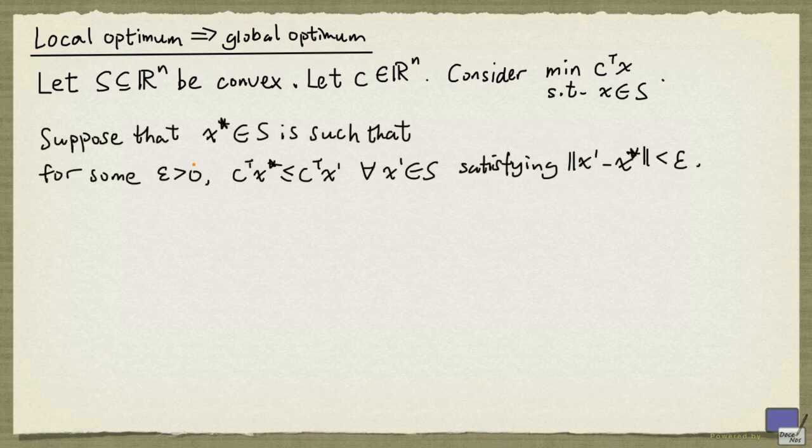Suppose that there is an element of S, x star, such that for some epsilon greater than 0, c transpose x star is less than or equal to c transpose x prime for all x prime in S satisfying the inequality norm of x prime minus x star less than epsilon. Here the norm signifies the 2-norm, meaning if y is in Rn, then the norm of y is given by the square root of y transpose y. What this is saying is that x star has the best possible objective function value in a neighborhood defined by epsilon.